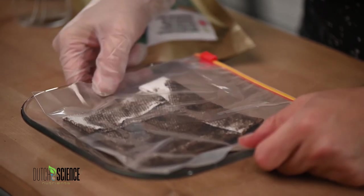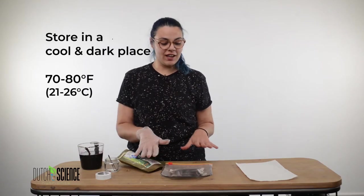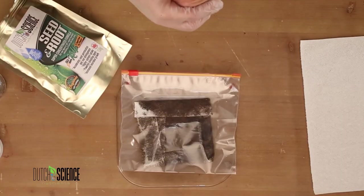Once you've got that in your Ziploc bag, you want to store it in a cool dark place around 70 to 80 degrees Fahrenheit and check on it every two days until they sprout.